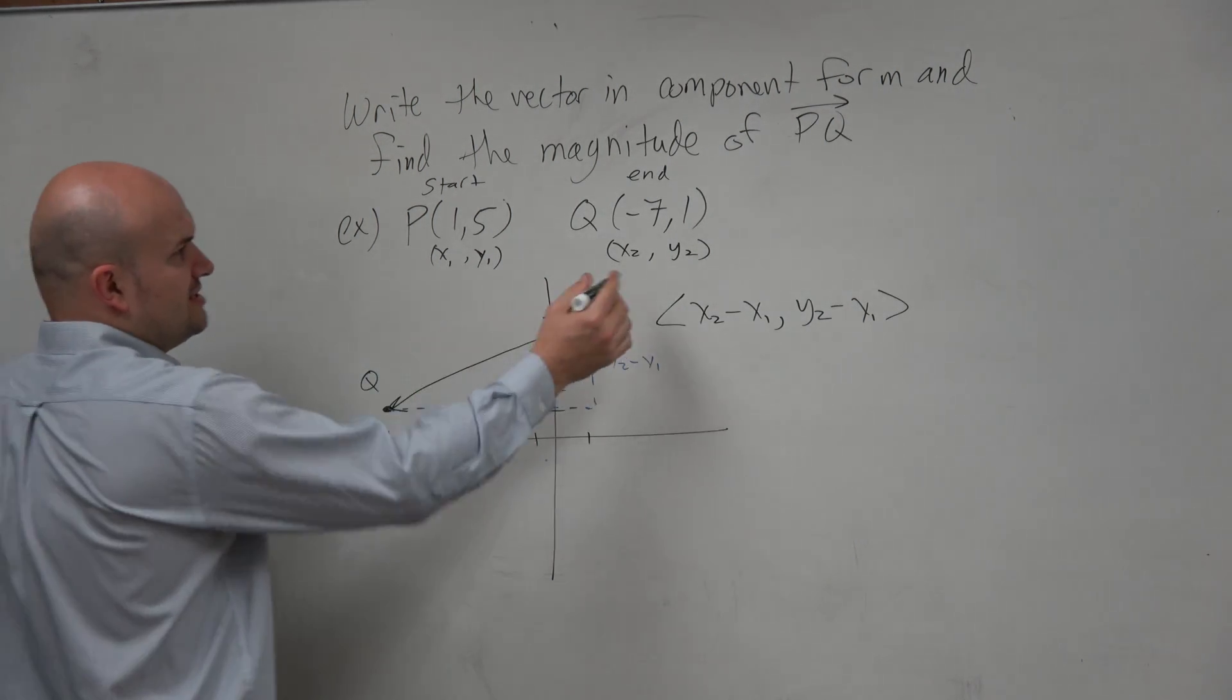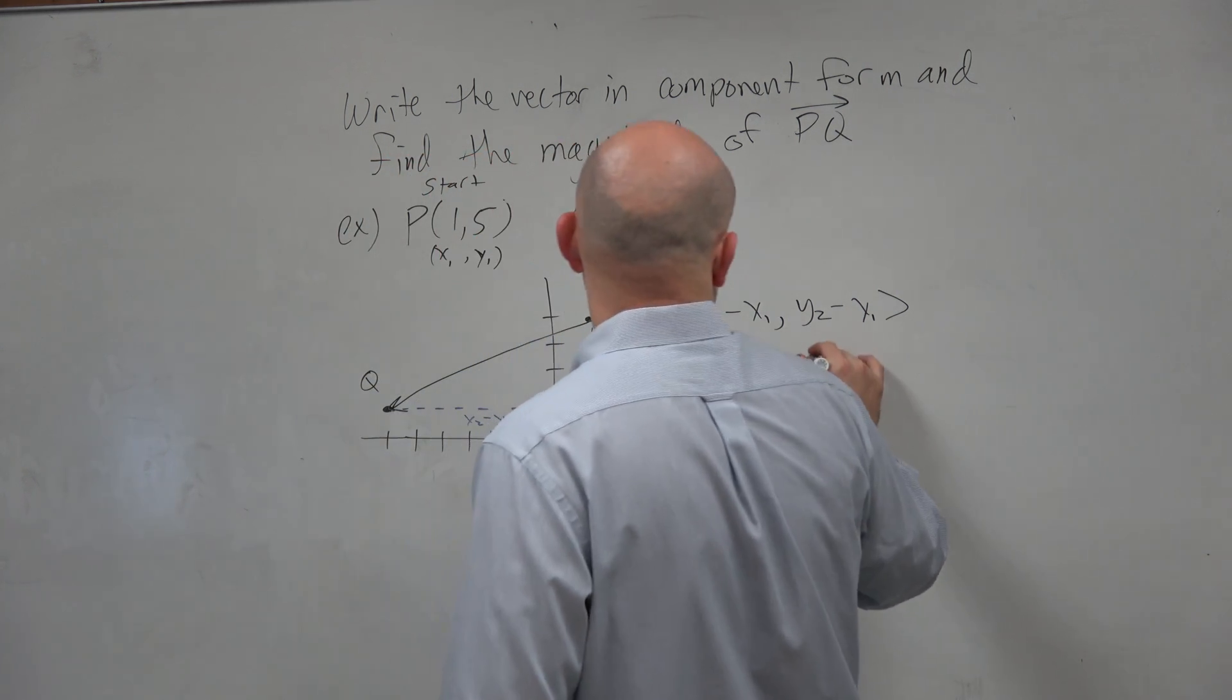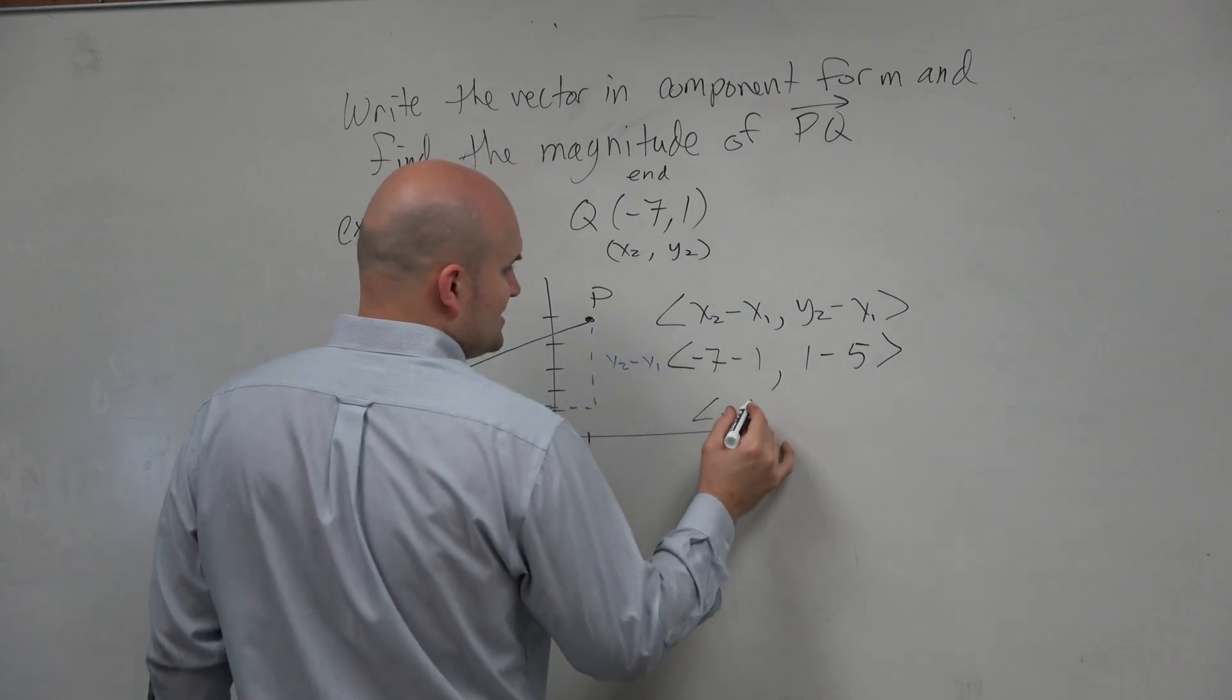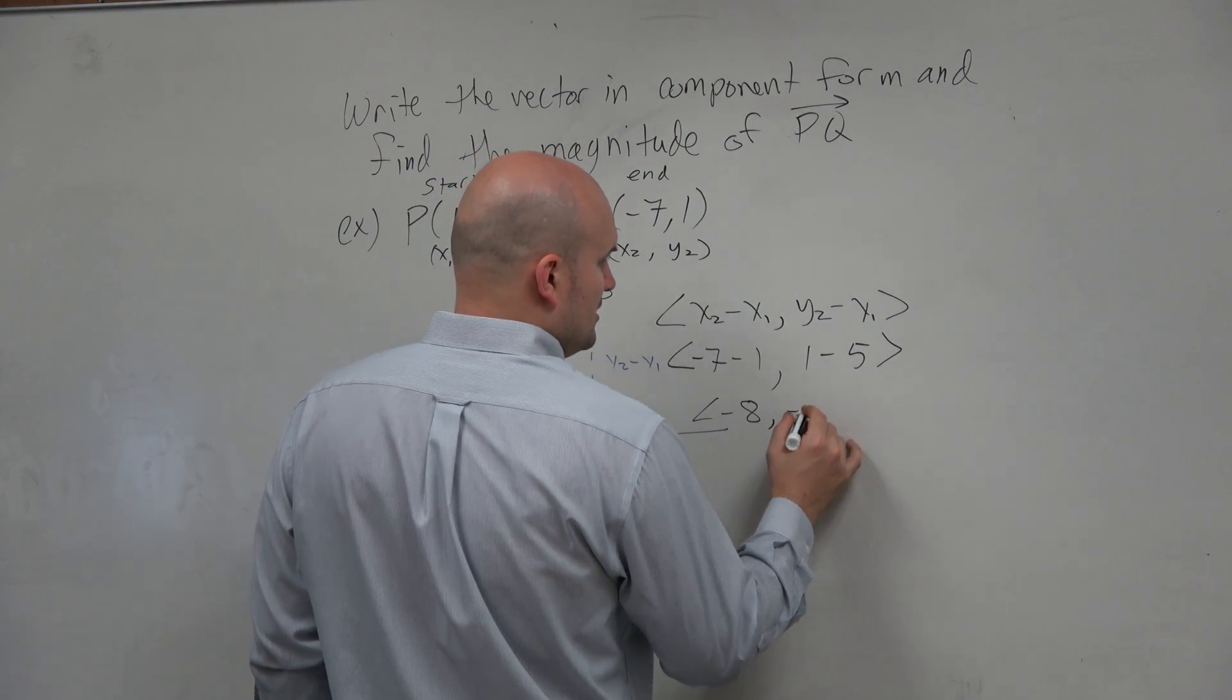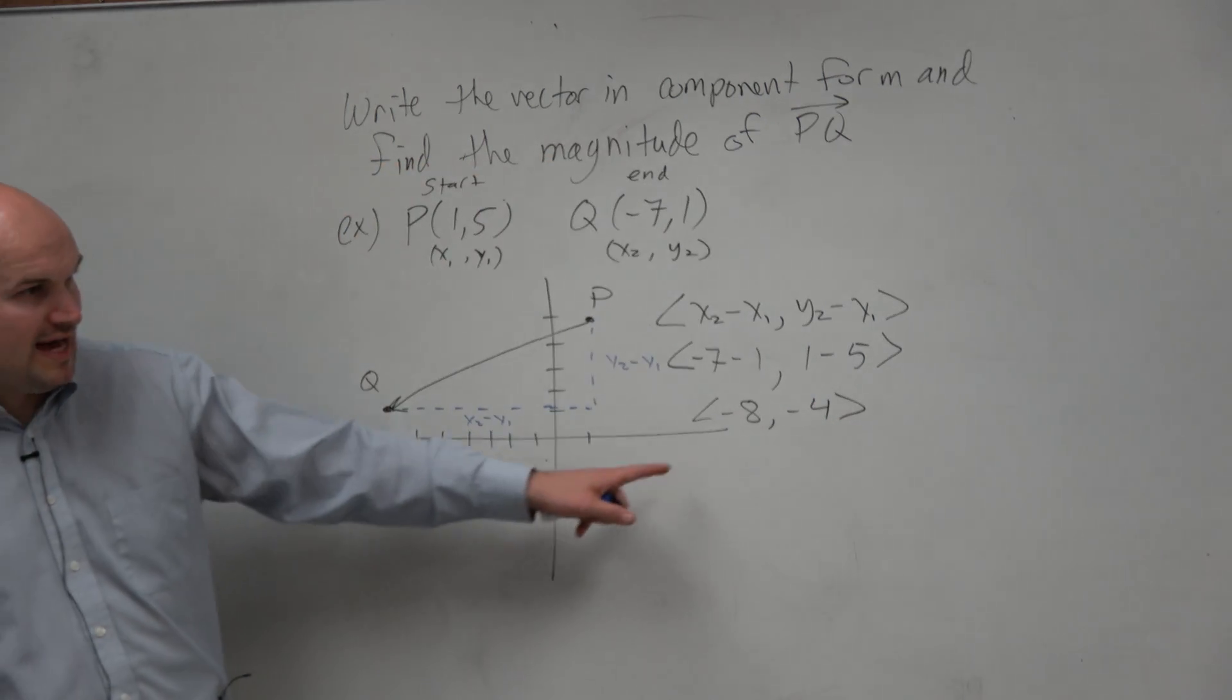So when we do this, I have -7 minus 1 and I have 1 minus 5. So therefore, my component form is (-8, -4). That is my component form.